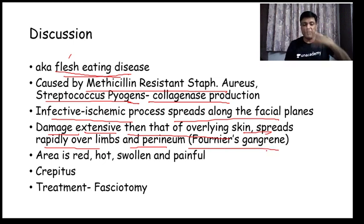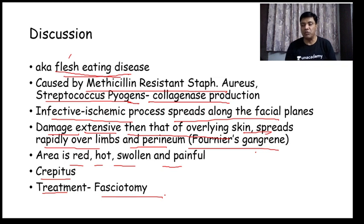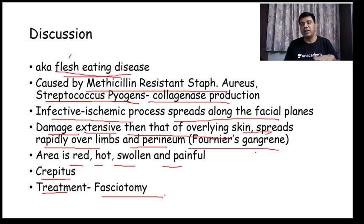In necrotizing fasciitis, the overlying skin may be intact but the damage is very extensive deeper down. It leads to ischemic necrosis. In the perineum it is called Fournier's gangrene. The area is red, hot, swollen, painful, and crepitus can be seen. Treatment is fasciotomy — you have to open the wound to drain the pus.